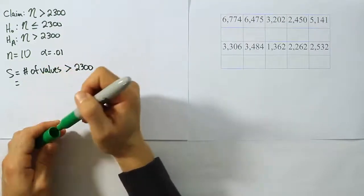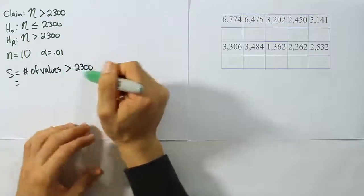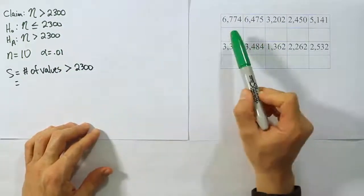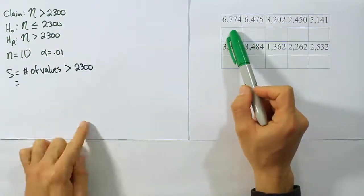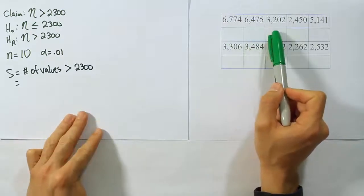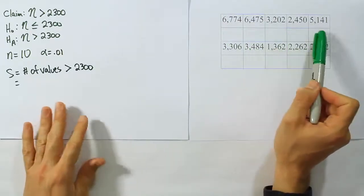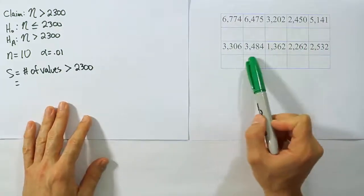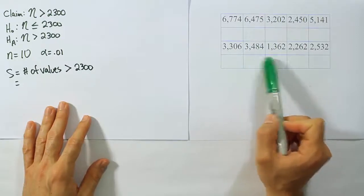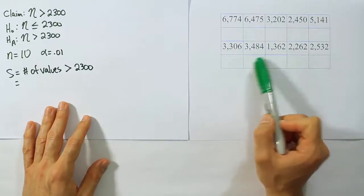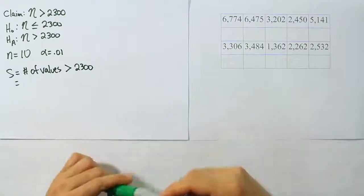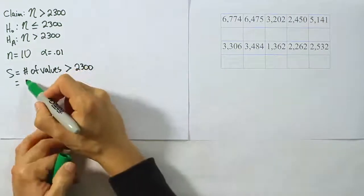Well, let's figure that out. How many values in our table are greater than 2300 milligrams? Well, it's certainly that one, so that's one, two, three, four, five, six, seven. That one's not. That one's not. That one is eight. We have eight values out of ten.